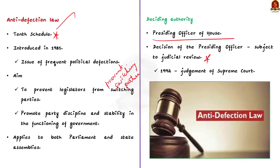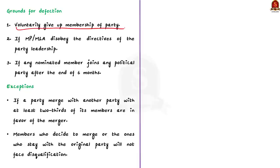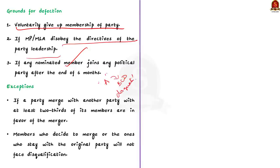Grounds for disqualification under the anti-defection law: first, if a legislator voluntarily gives up the membership of their party; second, if they disobey the directives of the party leadership, i.e., defy the party whip on any issue; third, if any nominated member joins any political party after the end of six months from their nomination, they may be disqualified.